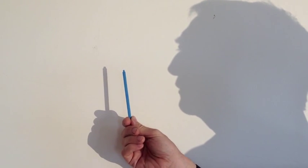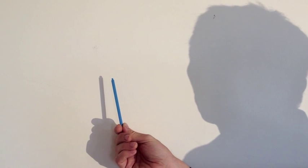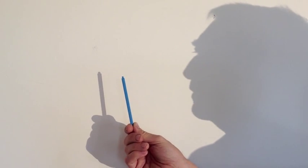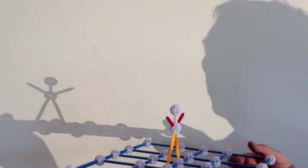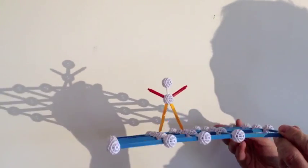And the only thing that makes a dimension special is that it's perpendicular to all the other dimensions. Now, what is perpendicular? Any two-year-old who can walk understands what perpendicular is.